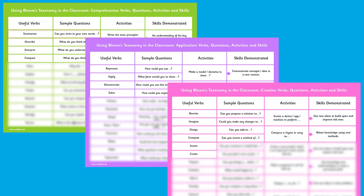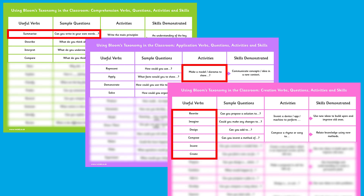Have your children summarise and write in their own words in the comprehension stage, make a model in the application stage, and so on all the way through to rewriting, inventing, creating, or imagining in the final creation stage.